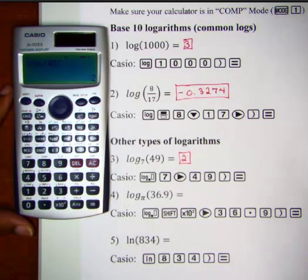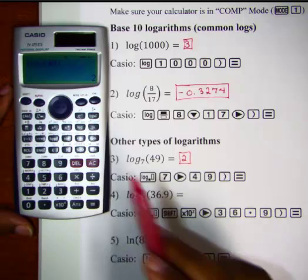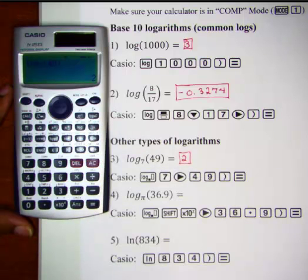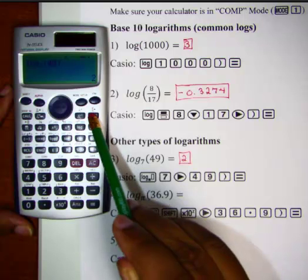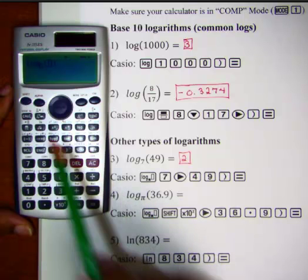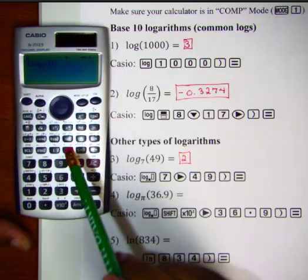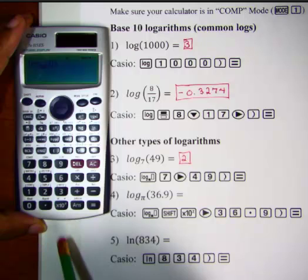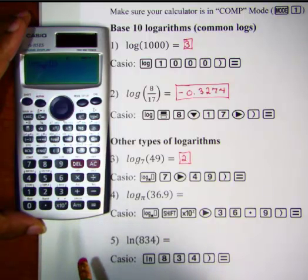Let's take a look at number 4. Sometimes the base number might be a number like pi. So what do we do in a case like that? Well, since it is a non-base 10 logarithm, we are going to use our special log key located here. So let's select this log key and the base is the number pi. So to get to pi on the Casio, we are going to hit the shift key and then we will hit our 10 to a power key. And there we have pi in the base position.